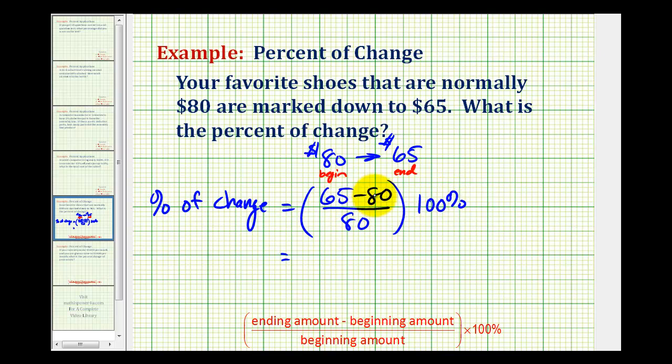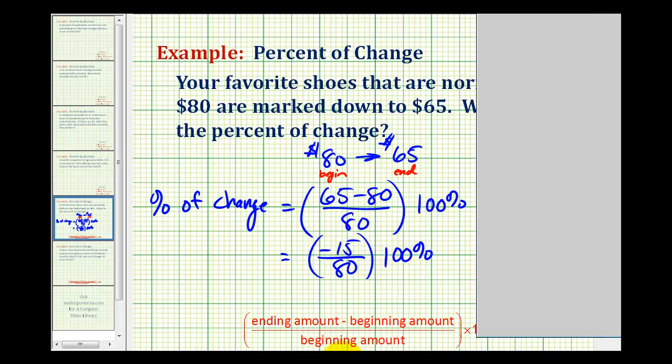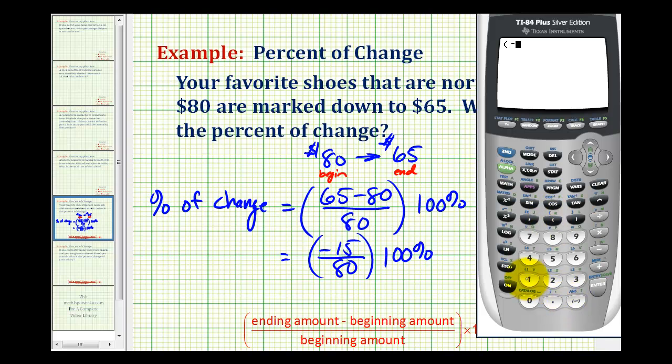65 minus 80 is equal to negative 15, so we have negative 15 divided by 80 times 100 percent. Let's do this on the calculator. We'll have negative 15 divided by 80 times 100. We'll have to add the percent symbol ourselves. So the percent of change is negative 18.75 percent.